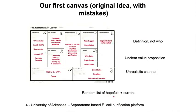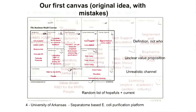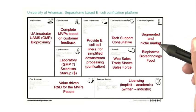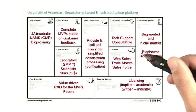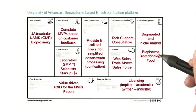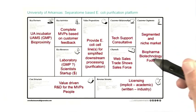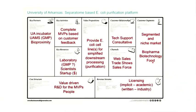So let's see how they got from something that started like that — and you shouldn't laugh, because your first canvas might look like this — to what happened after they got out of the building. Now you could see that instead of just 'segmented niche market,' they started to understand that maybe the market is somebody specific — a farmer, or someone in technology or food. It's still kind of vague, but they're getting a little better.